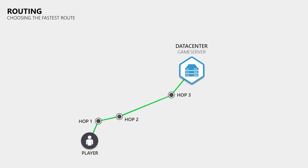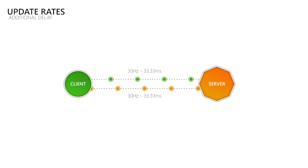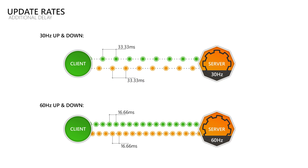The lag we experience in a game can never be lower than the data travel time, because we would have to break the laws of physics to speed up the electrons or photons used to communicate with the server. What adds an additional delay on top of the travel time is how frequently we send and receive data. When we send and receive 30 updates per second there is more time between updates than when we send and receive 60 updates per second. So by sending and receiving more updates per second, you can decrease the additional delay added on top of the travel time.